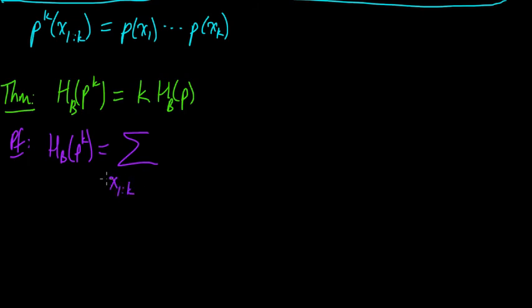The definition is the sum over all the elements. And in this case, the elements are these sequences, x1 to k, times the probability of that element log one over the probability. This is just the same definition, using slightly different notation since we have sequences now.